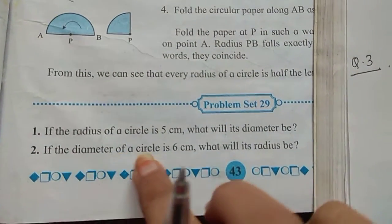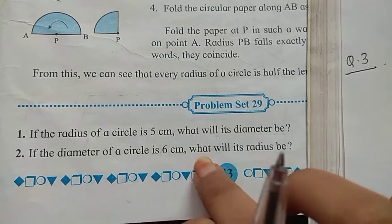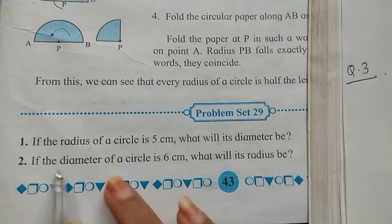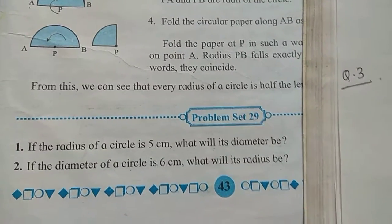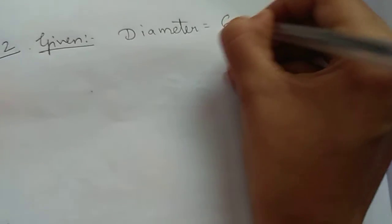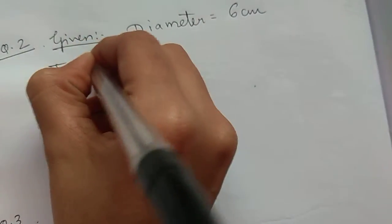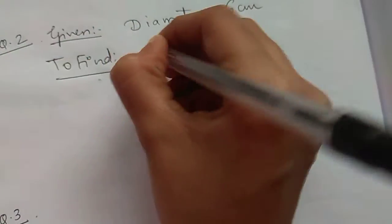Question number 2 is, if the diameter of a circle is 6 cm, what will its radius be? In this case, diameter is given, we have to find radius. So again given, diameter 6 cm, to find radius.